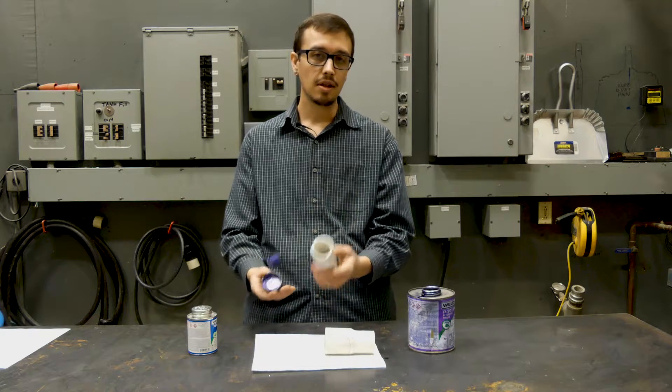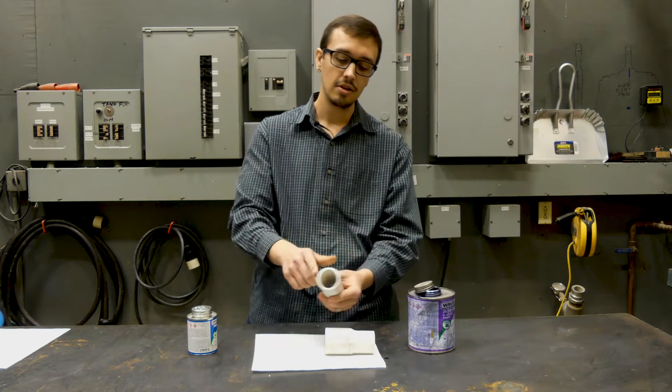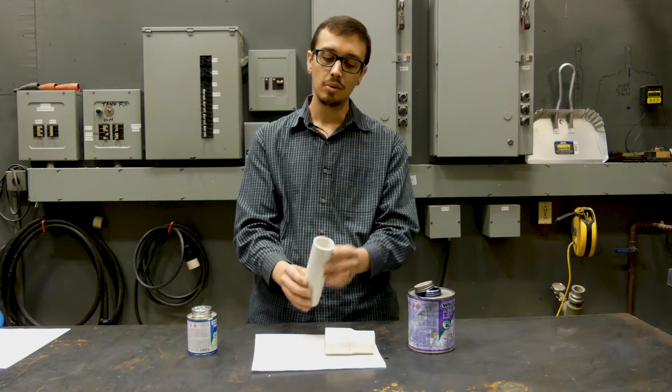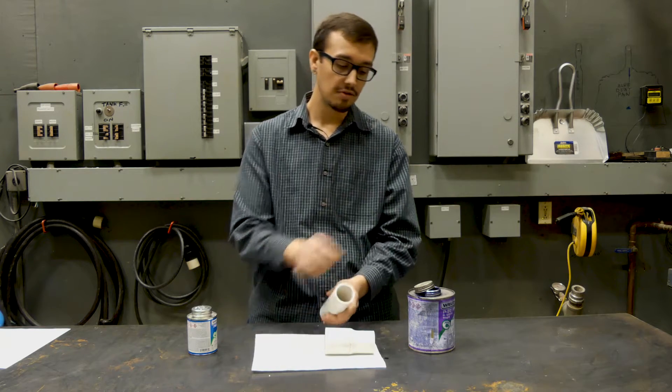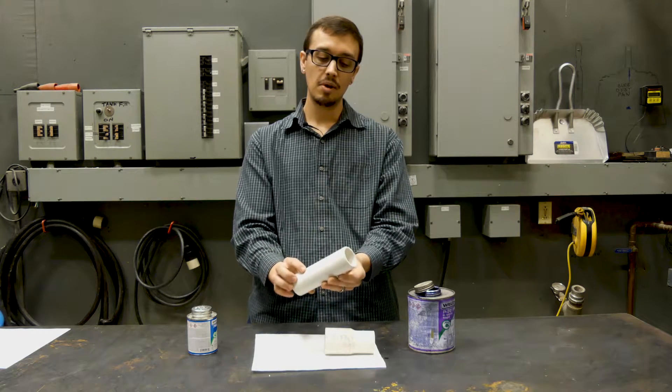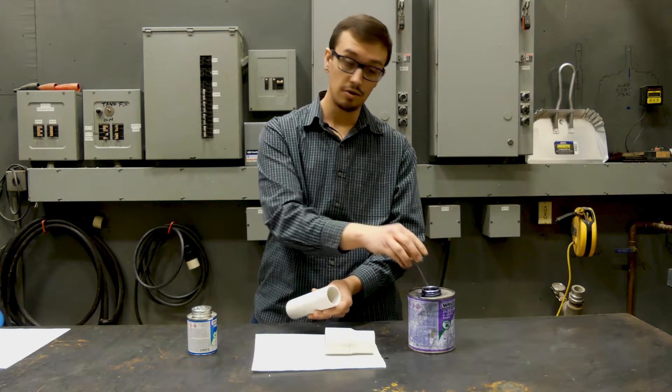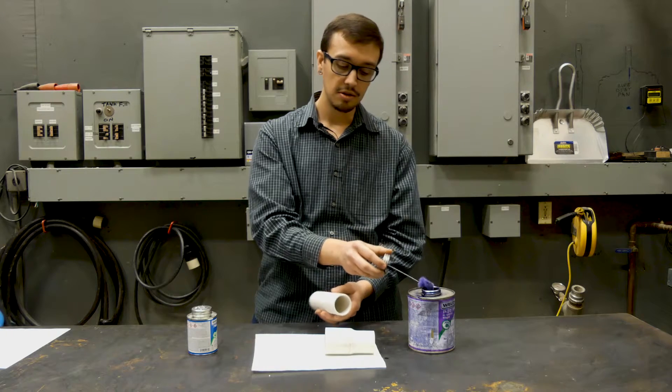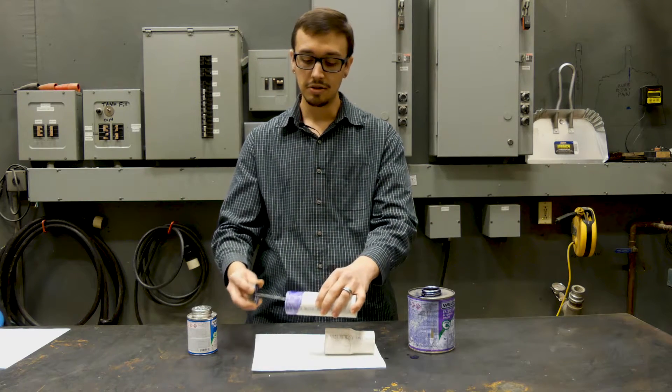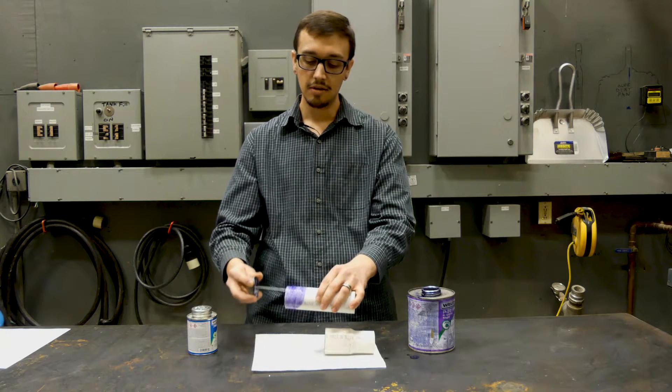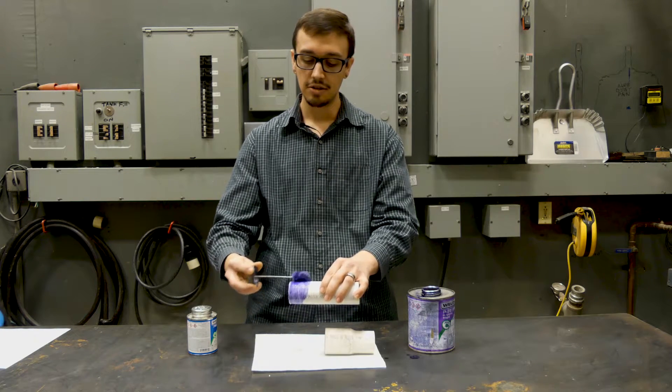And another important thing that oftentimes is overlooked in the field is the bevel that you apply to the PVC fitting that's going into the other fitting. And so you need to have at least a 10 degree bevel. It's easiest to do this on a wheel grinder. But if you're out in the field and you're in a pinch, you can always just pull out your pocket knife or a razor knife and just kind of shave away at that. It just takes a little bit longer.